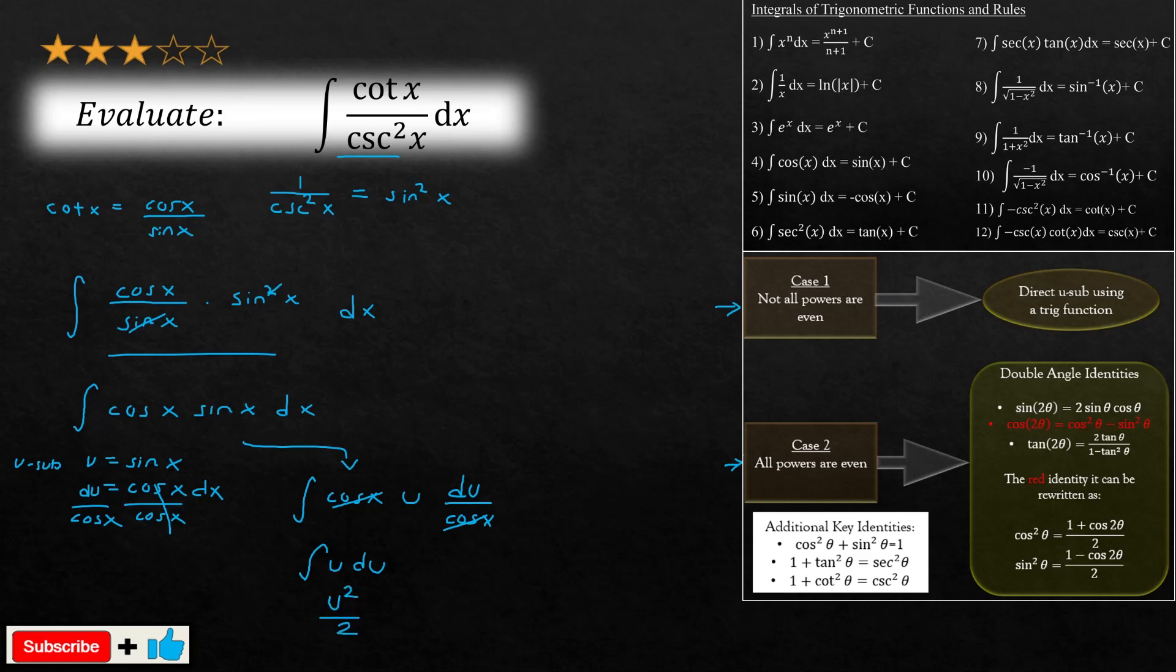You substitute back in your u variable, which in this case is your sine value. It's just going to be equal to sine x squared divided by 2, and don't forget your cheeky plus c at the end.